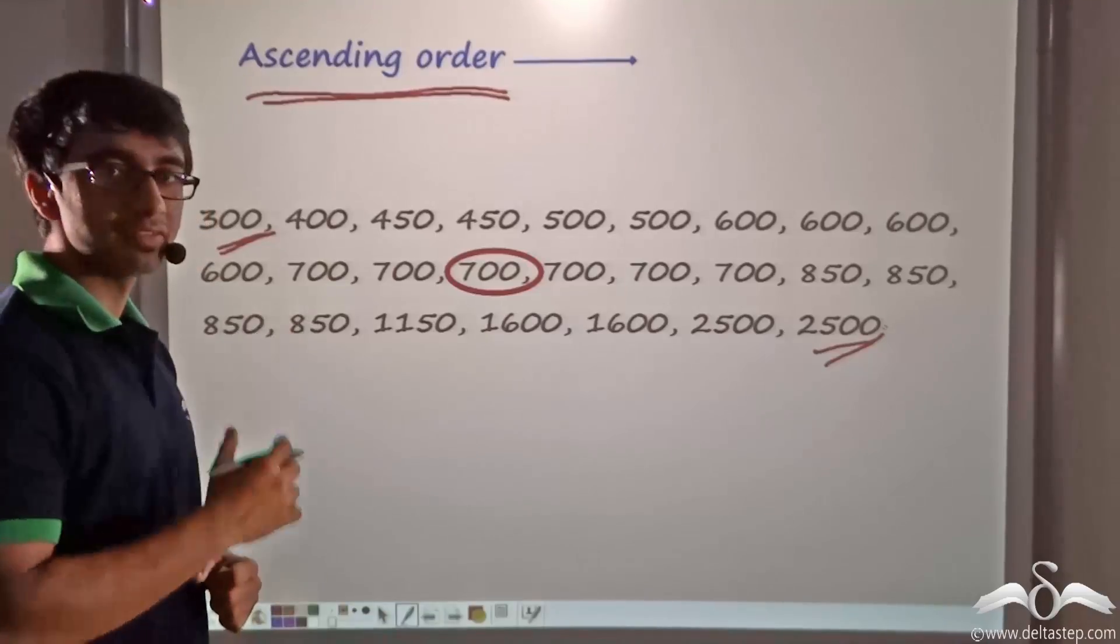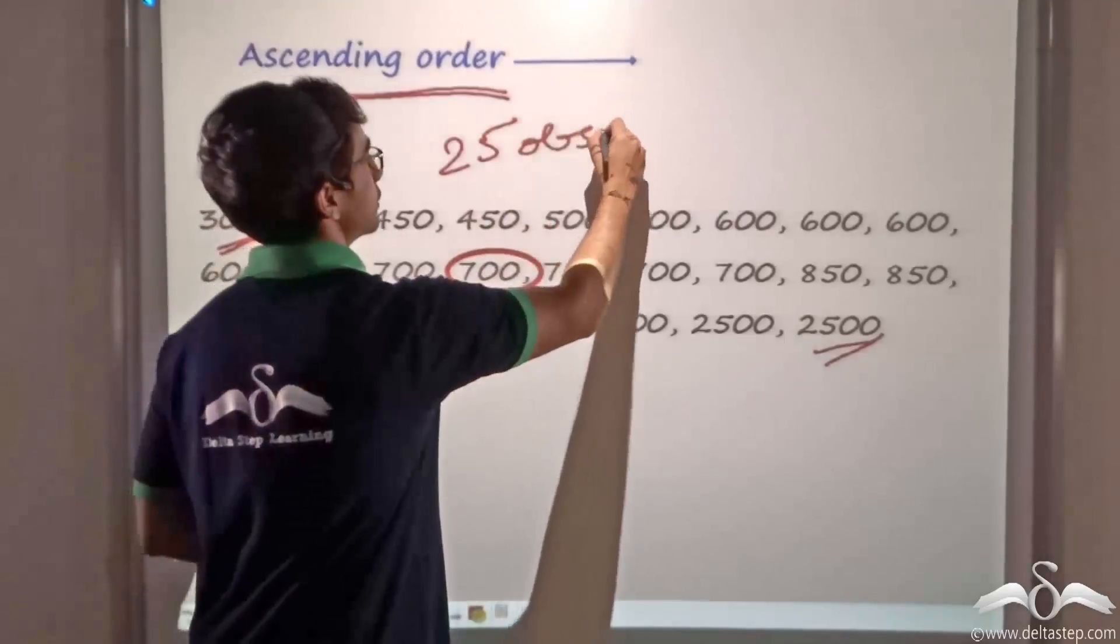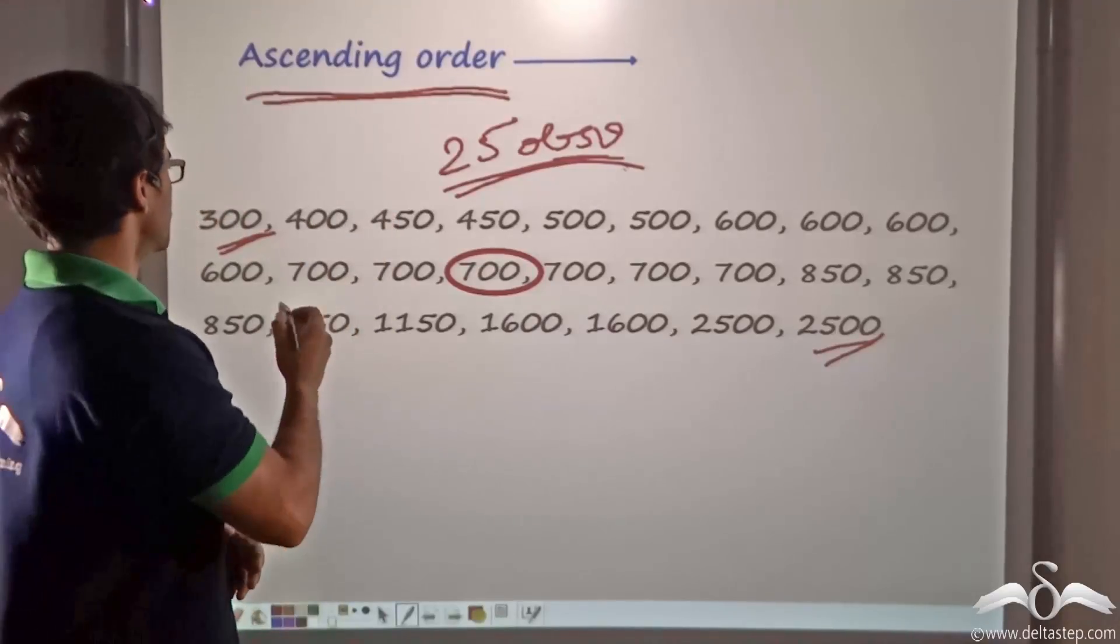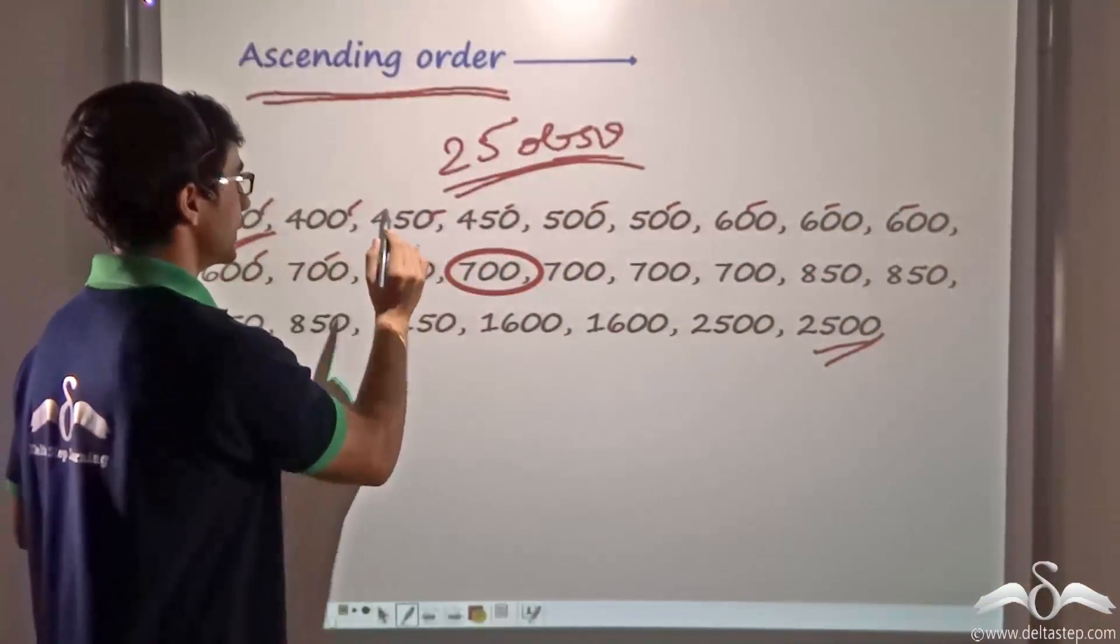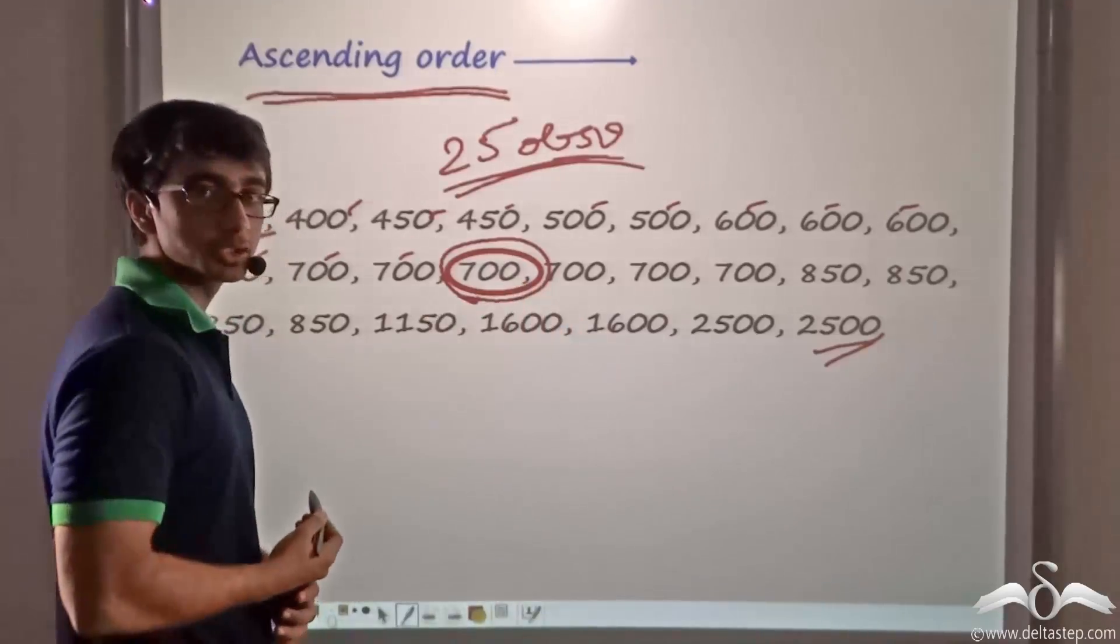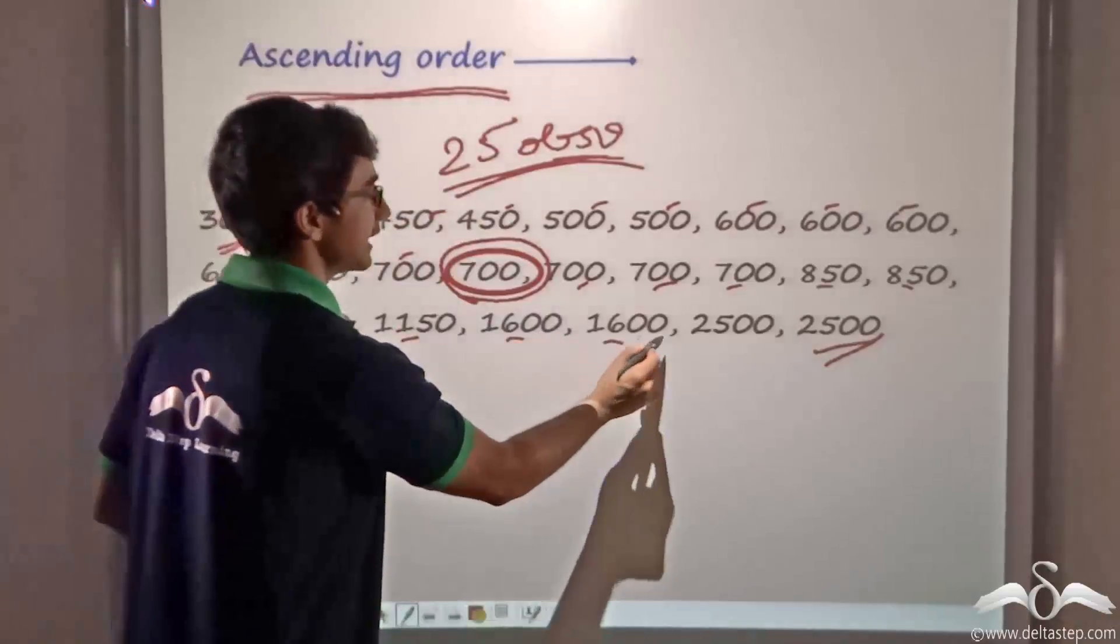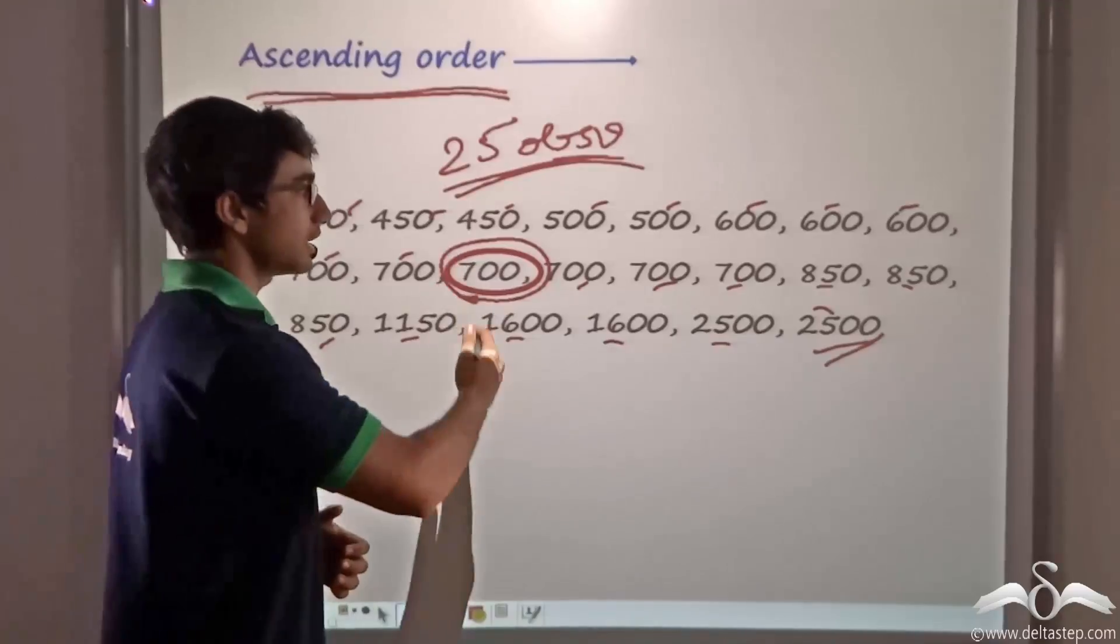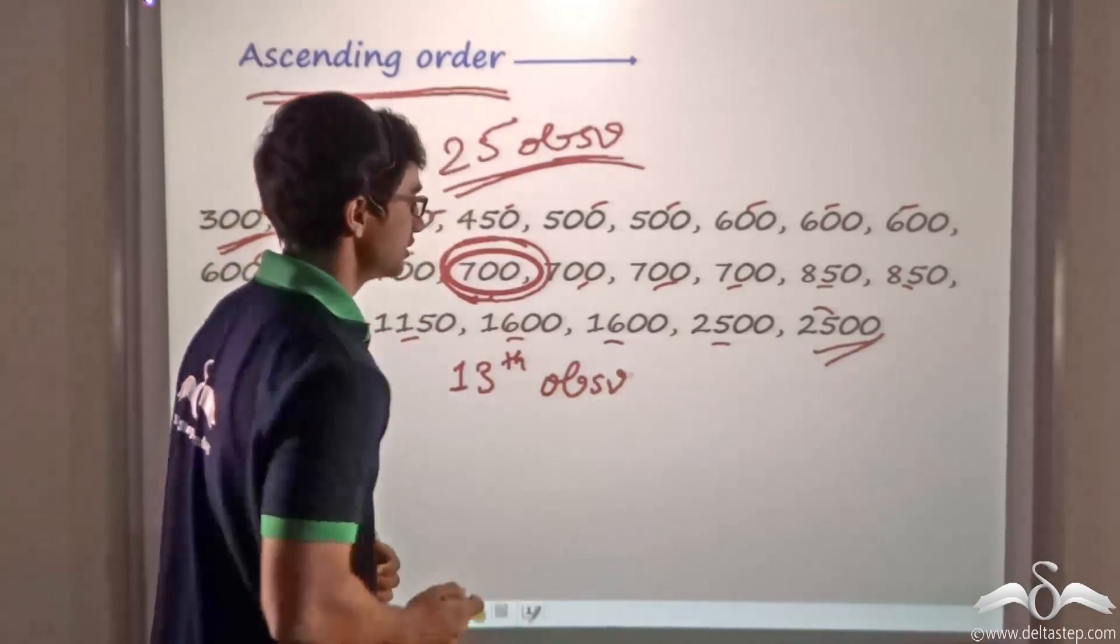Now the shopkeeper finds out what the middle value of this set of observations is. So over here we have 25 observations. How can we find out the middle value for 25 observations? Again, we start counting. So I have 1, 2, 3, 4, 5, 6, 7, 8, 9, 10, 11, 12. Now I arrive at this particular value which is the 13th value. I will find that if I go on counting after the 13th value, I will get 12 more values. Let us find out. 1, 2, 3, 4, 5, 6, 7, 8, 9, 10, 11, 12. So what do I have now? I have 12 values before this 700 and 12 values after this 700. So I can say that this observation that is the 13th observation is the middle value.